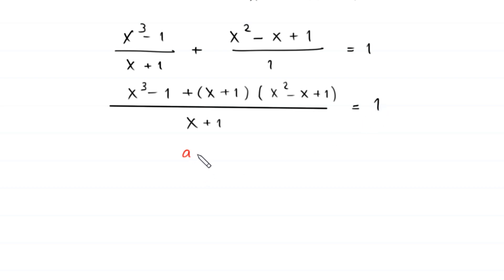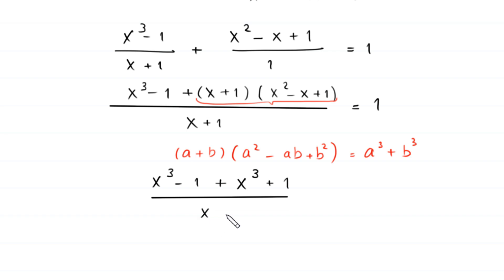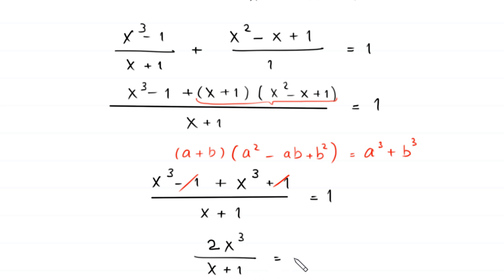By using the algebraic identity (a + b)(a² - ab + b²) = a³ + b³, this (x + 1)(x² - x + 1) becomes x³ + 1. So x³ + 1 + (x³ - 1)/(x + 1) = 1. The positive 1 and negative 1 cancel, and x³ + x³ = 2x³, giving us 2x³/(x + 1) = 1.